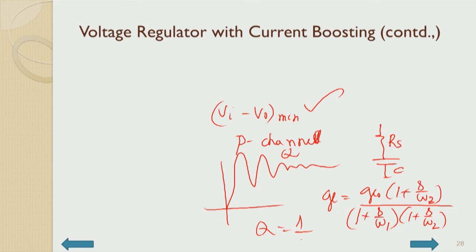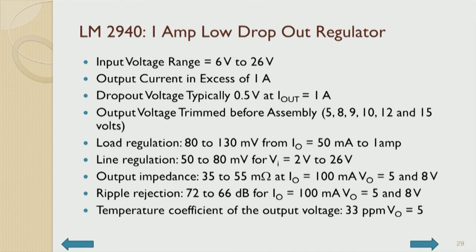LM2940 is one such low-dropout regulator manufactured by TI. Input voltage range is 6 to 26 volts, output current in excess of 1 ampere. Available output voltages include 5, 8, 9, 10, 12, or 15 volts, with all compensation adjustments set accordingly by the manufacturer.